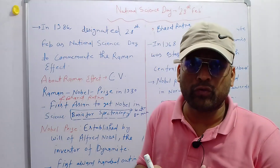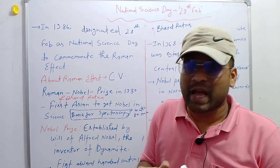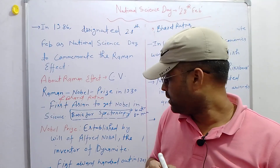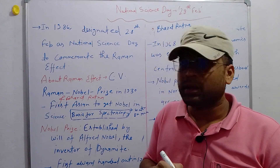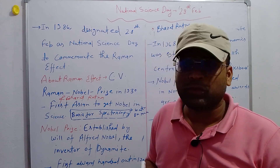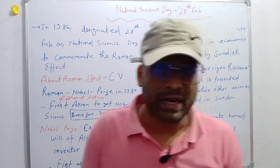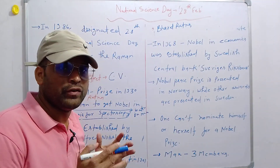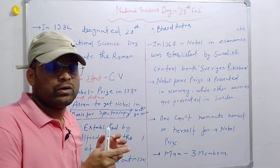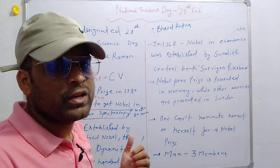Now we will talk about what is Nobel Prize. It was established by Alfred Nobel, who was also the inventor of dynamite. For the first time, this award was given in 1901, and since then it is given each and every year. But there was a certain disruption during World War One and Two; otherwise, this award is given each and every year.